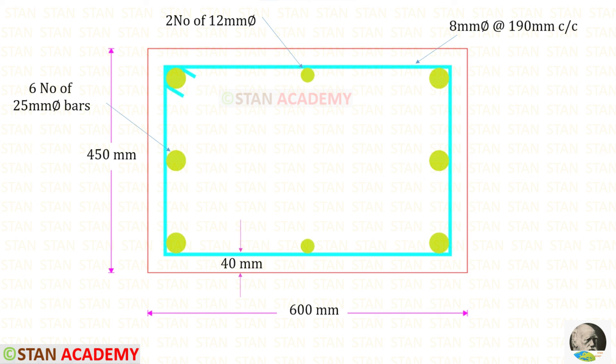Here you can see the cross section with the reinforcement details. Let us keep 40 mm as the clear cover. Now we are going to end this session. Thank you for watching this video.